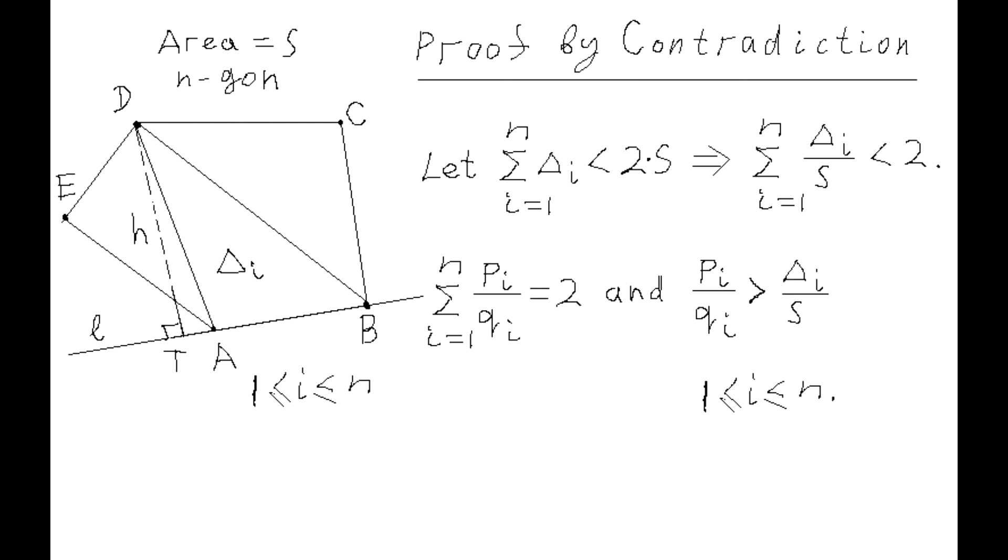And let's prove the statement of this problem by contradiction. The contradictory assumption is that the sum of areas of all super triangles of this polygon is strictly less than 2 times S, where S is the area of the given polygon. This can be rewritten as the sum of ratios triangle I to area S for all sides of this polygon and that this sum is strictly less than 2.